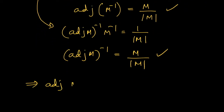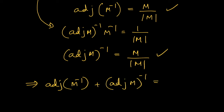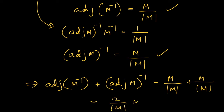So adjoint of M inverse plus adjoint of M whole inverse equals M over determinant of M plus M over determinant of M, which is 2 over determinant of M times M. Since determinant of M is minus 2, this equals minus M.